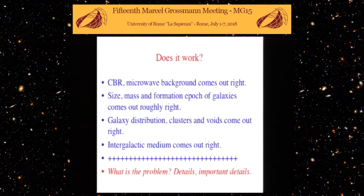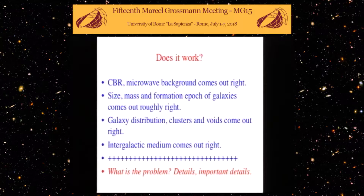So what are the problems? The problems are details. Remember, Newton worked very, very well, and there were lots of supposed objections in the solar system — they all went away, except finally by the 20th century the advance of the perihelion of Mercury. Well, there are details that are not working out in Cold Dark Matter.